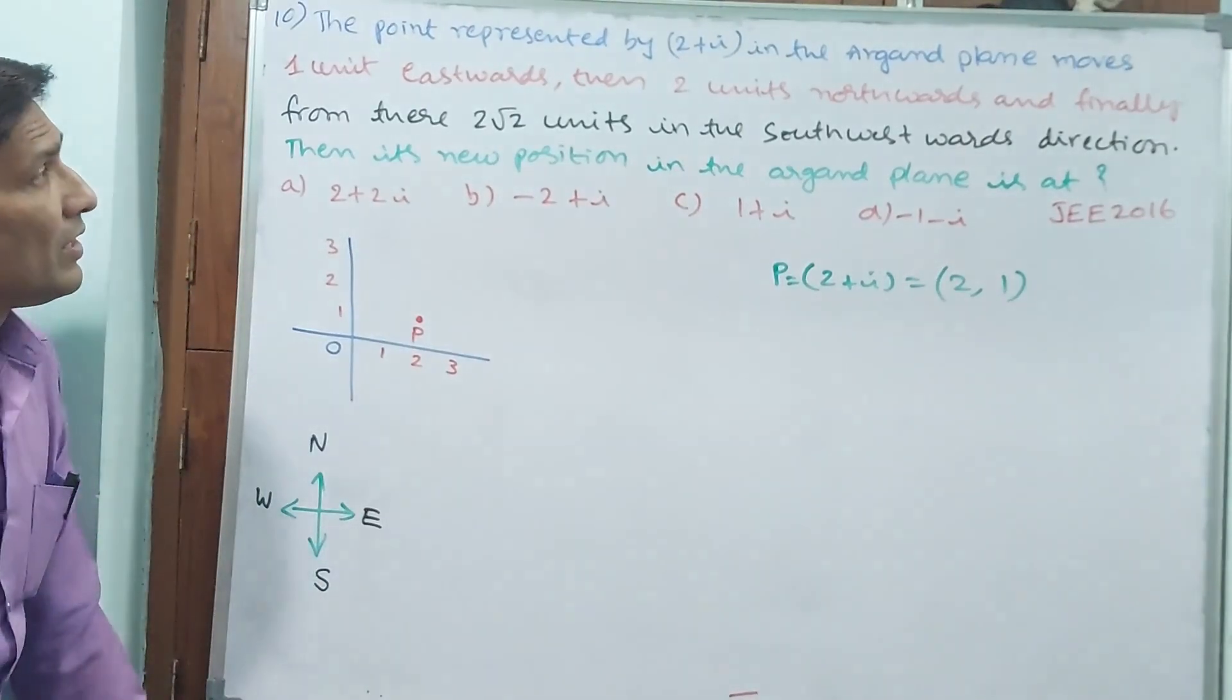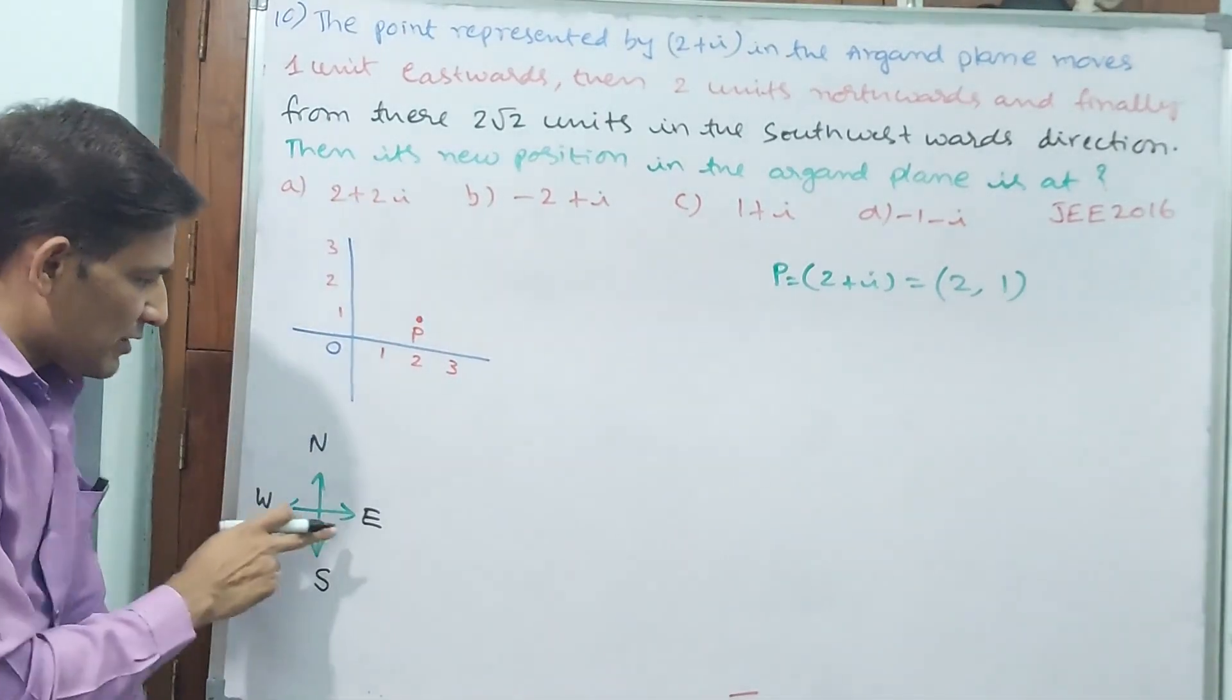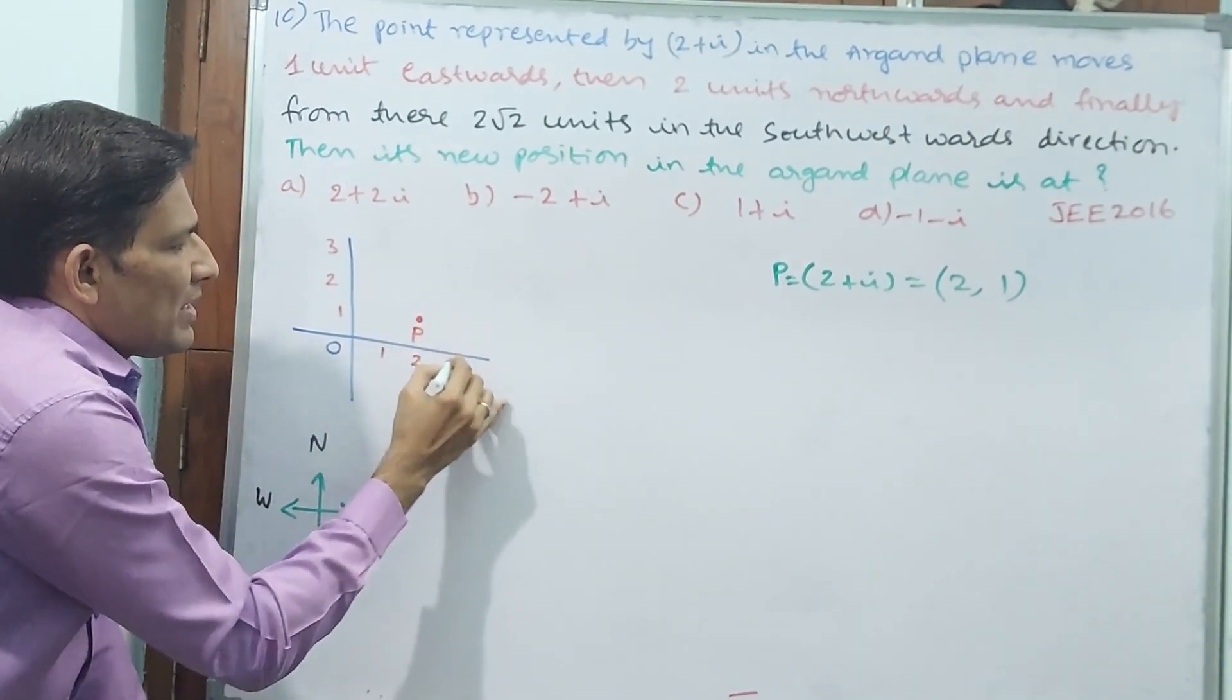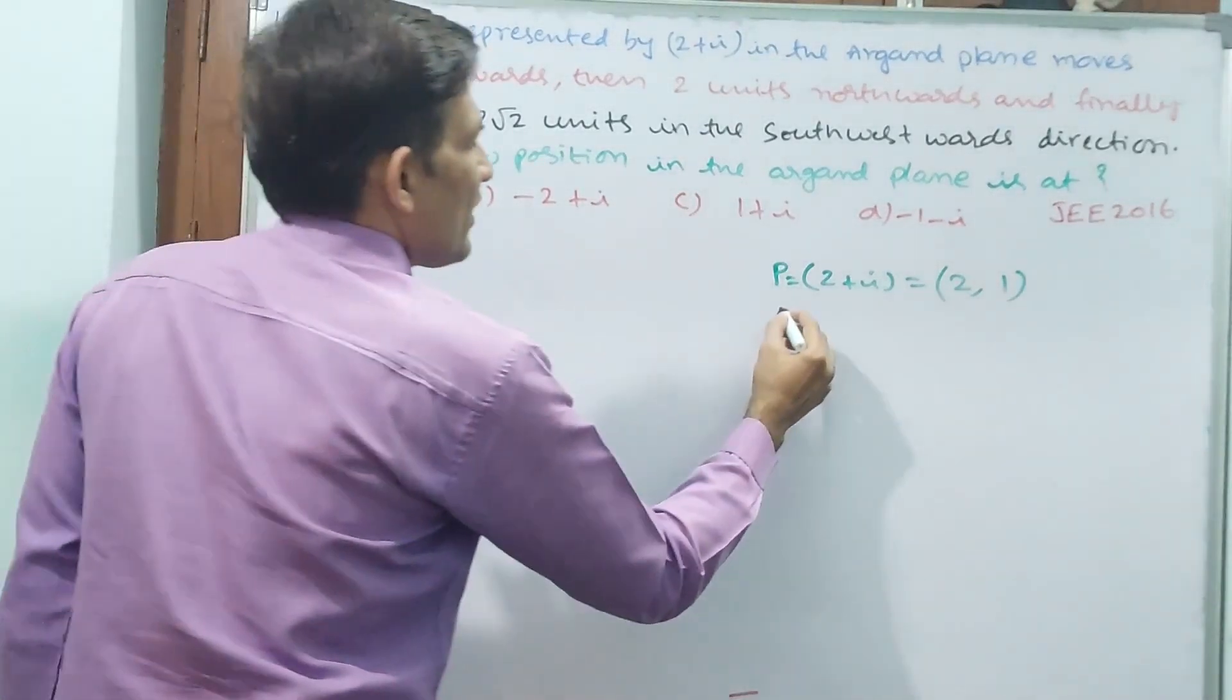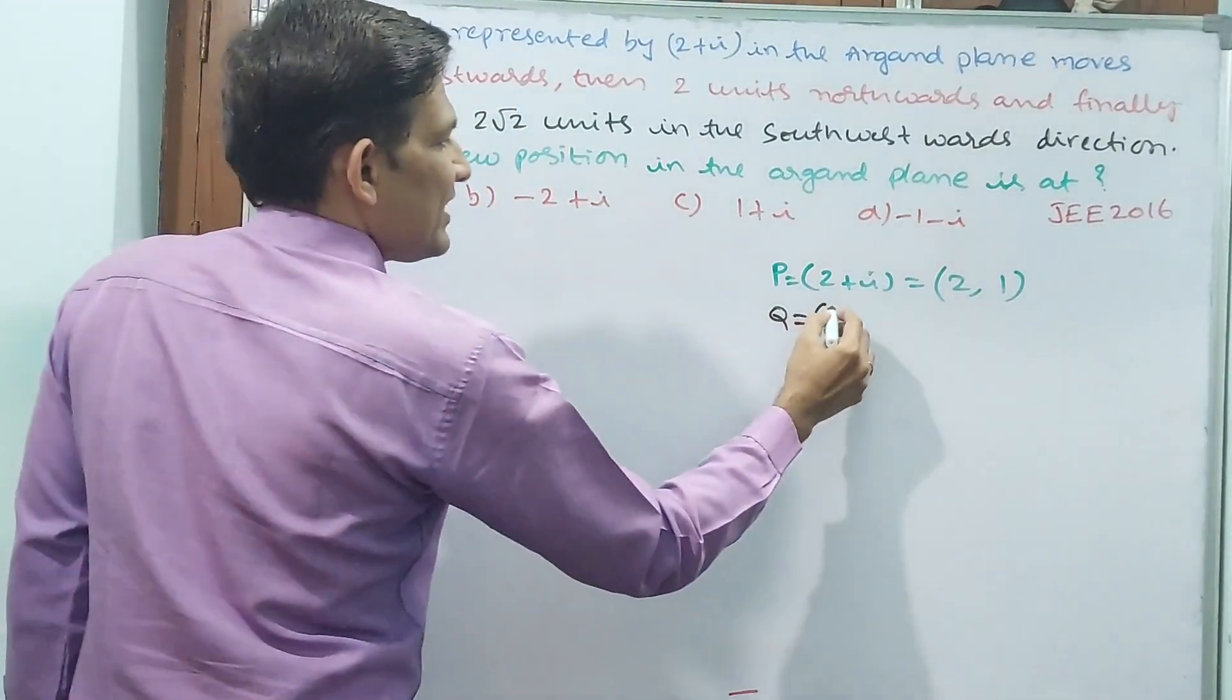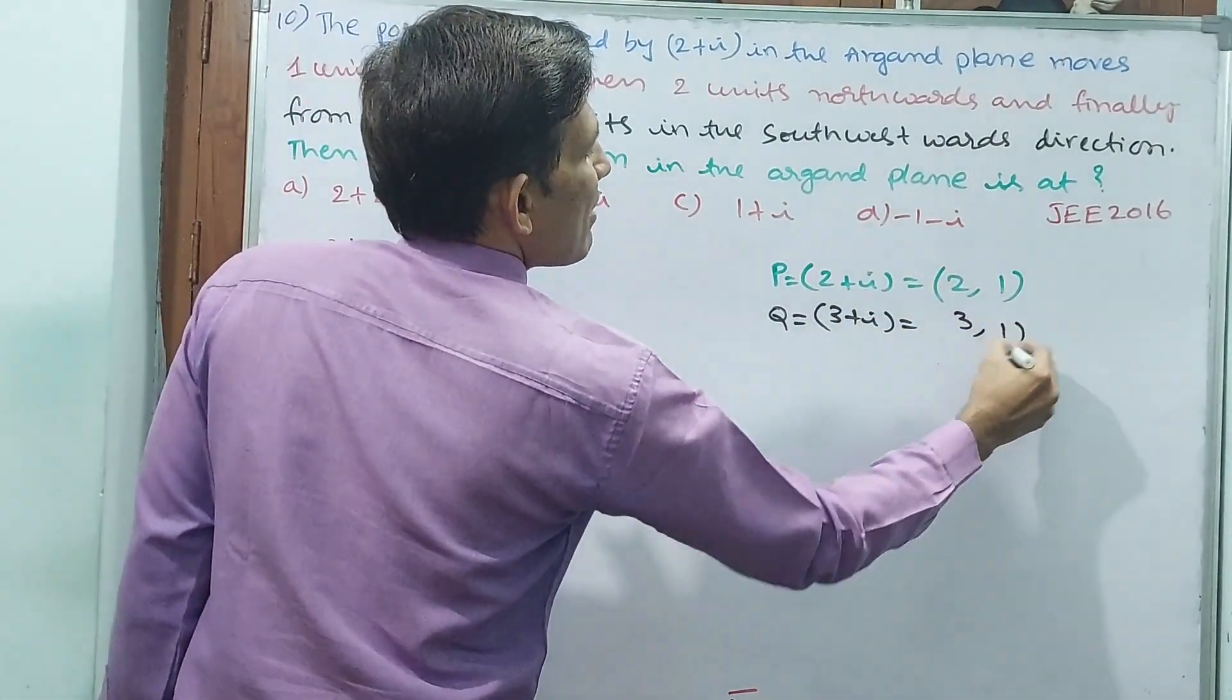Go back. 1 unit eastwards. Eastwards means this movement, that means 1 unit means straight line is moving, means up to 3 it goes. Now I will take this as Q. Now I have read Q. Q, you see, in x-axis it is 3, in y it is already plus 1. That is equal to 3 comma 1.